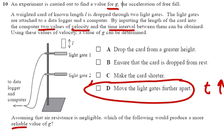An experiment to find a value for g, the acceleration of free fall. A weighted card of known length is dropped through two light gates. Dropping the card from a greater height will create two velocities that are closer to each other, which won't give us a good difference.